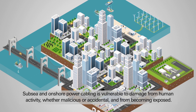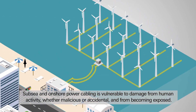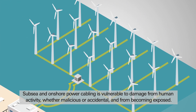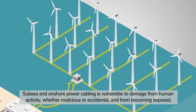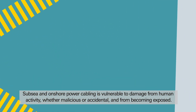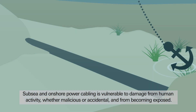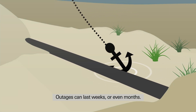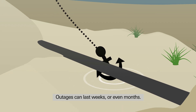Subsea and onshore power cabling is vulnerable to damage from human activity, whether malicious or accidental, and from becoming exposed. Outages can last weeks or even months.